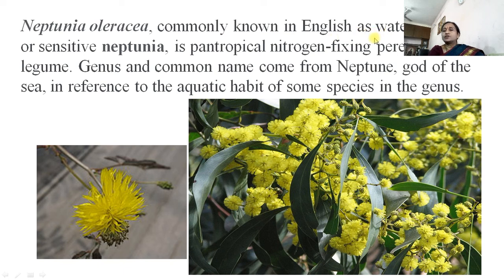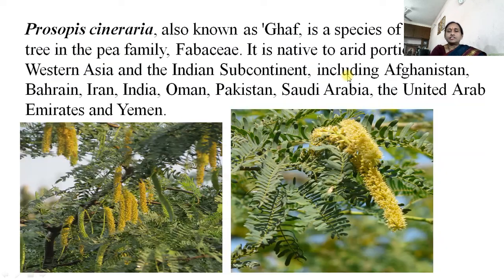Neptunia oleracea, commonly known as water Mimosa or sensitive Neptunia, is a pantropical nitrogen-fixing perennial legume. Its genus and common name come from Neptune, the god of the sea. Prosopis cineraria, also known as ghaf, is a species of flowering plant native to arid portions of western Asia and the Indian subcontinent.